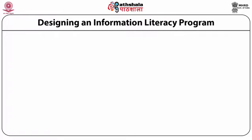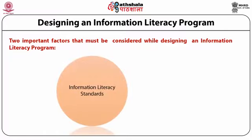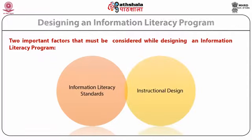Now let's come to designing of an information literacy program. There are two important factors that must be considered while designing an information literacy program. The first factor is information literacy standards and the second one is the instructional design. The first important factor is IL standards. A standard represents a specific idea of what we expect the students to recall, replicate, manipulate, understand, or demonstrate, and of how we will know how close a student has come to meeting that standard. Information literacy standards have been laid down by many institutes and associations of library and information science to guide librarians in assessing user needs, framing information literacy programs, and in evaluation of performance outcomes of users.